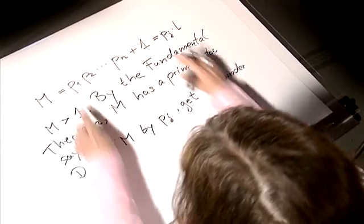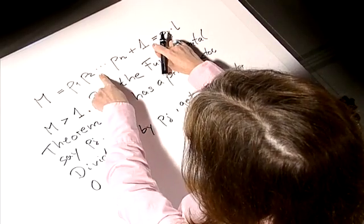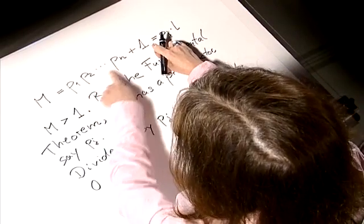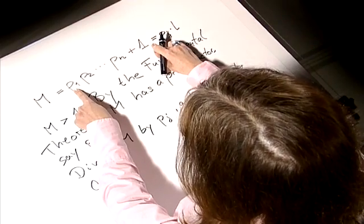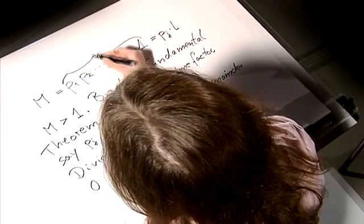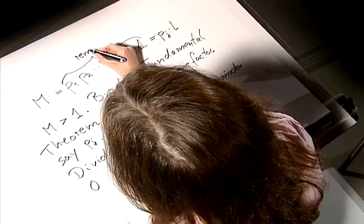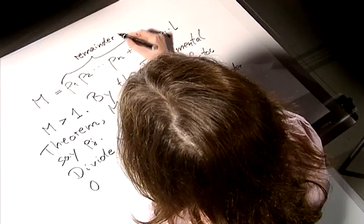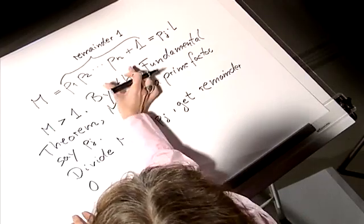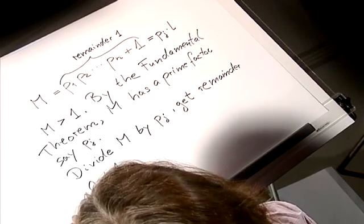But if we look at the way we constructed m and check what it means to divide m by pj — pj sits inside the product, so dividing gives pj times some integer, plus one. That means we get remainder one. So dividing m by pj gives remainder zero from one view, and remainder one from the construction. Zero is not equal to one, so we have a contradiction.